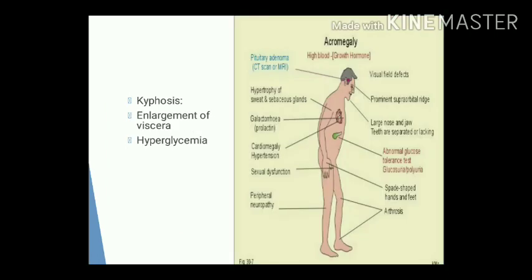Another clinical feature is kyphosis, due to improper vertebral growth. The person also has enlargement of internal viscera, including cardiomegaly, hepatomegaly, splenomegaly, and renomegaly.